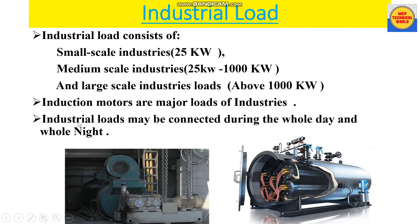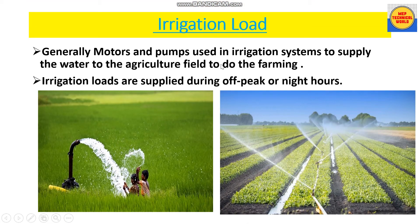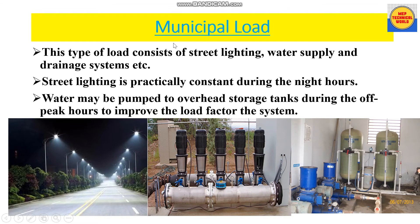Irrigation load generally refers to motors and pumps used in irrigation systems to supply water to agriculture fields for farming. Irrigation loads are supplied during off-peak hours or night hours. As we can see in this picture, an electric pump is watering the fields, and in another picture, sprinkler pumps are irrigating the fields.